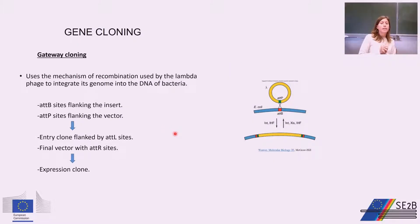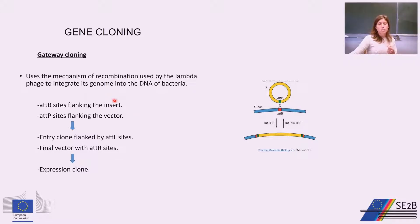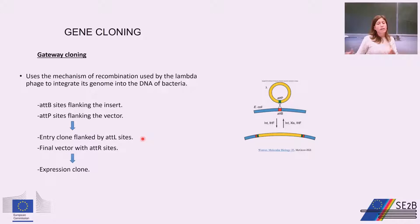Another cloning method is gateway cloning. This method uses the recombination mechanism of the lambda phage to integrate its genome into bacterial DNA. The gene of interest is flanked by ATTP sites while the vector is flanked by ATTB sites. Site-specific recombination integrates the gene into the vector, producing an entry clone flanked by ATTL sites. A second recombination event with a final vector containing ATTR sites produces the expression clone.